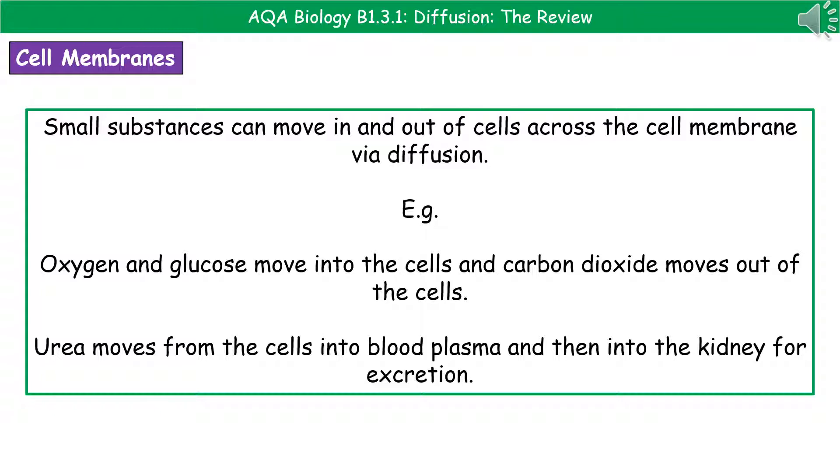When we're considering diffusion in living things, we're really looking at small substance movement. When we're thinking about our small substances, they're able to move in and out of cells across the cell membrane via this process of diffusion. We've got a few key examples here. The first one is oxygen and glucose, which are able to move into the cells. And we've got carbon dioxide, which will move out of the cells.